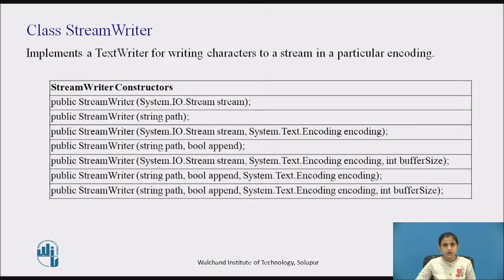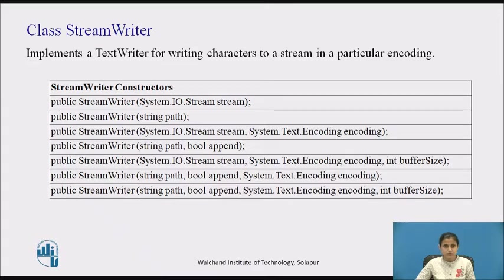The System.IO namespace provides types for reading encoded characters from streams and writing them to streams. Streams are designed for byte input and output. Each reader and writer class is associated with a stream. StreamReader and StreamWriter classes are used for reading and writing characters by using an encoding value to convert the characters to and from bytes.